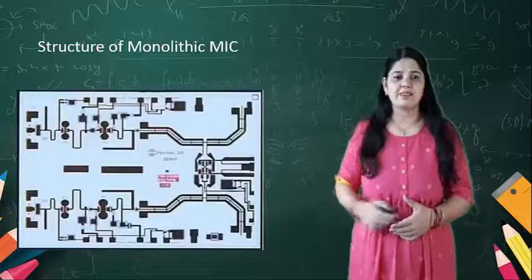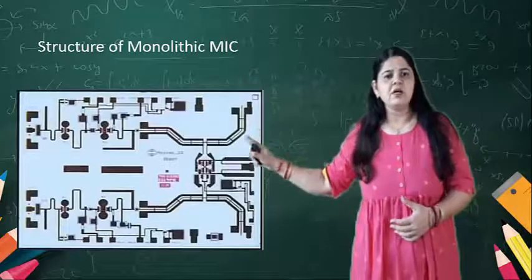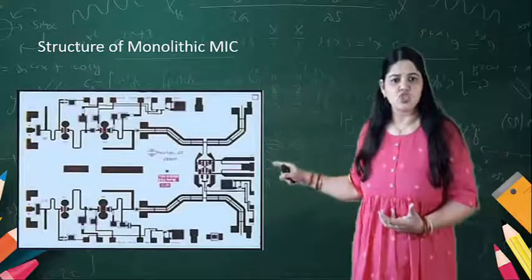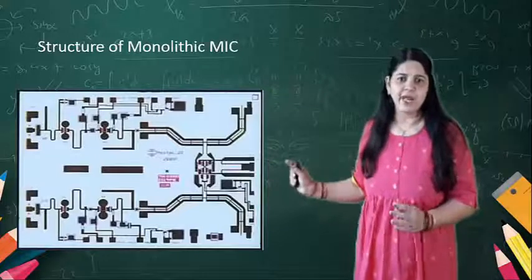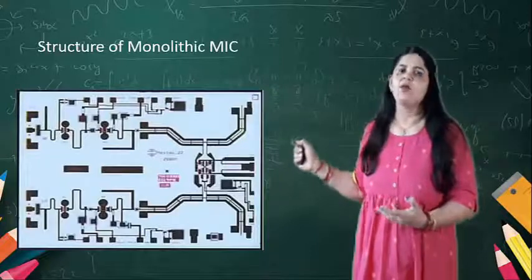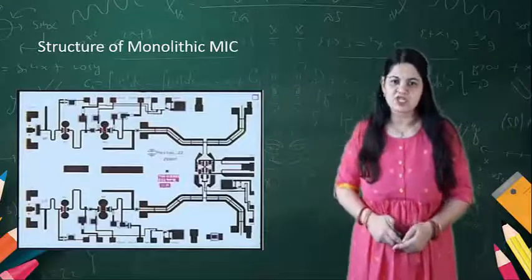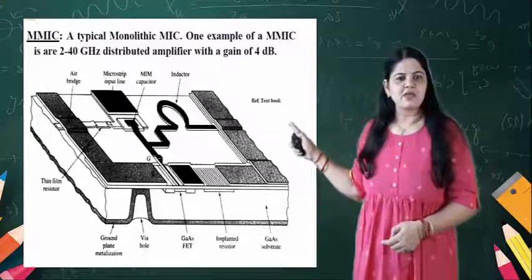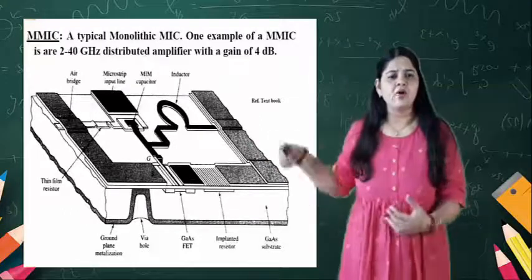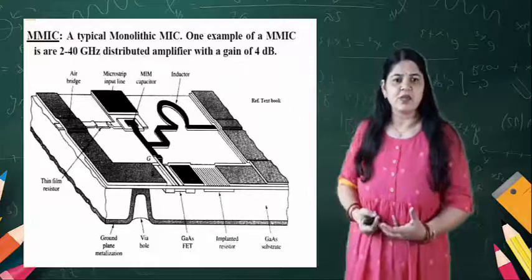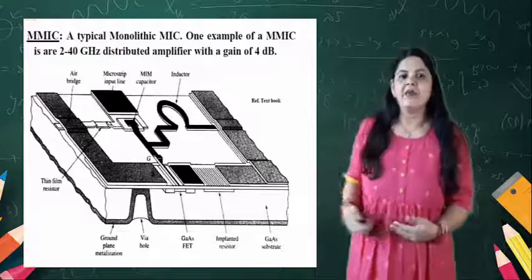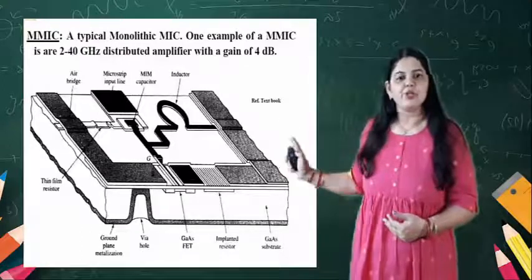Now the structure of the monolithic MMIC — you can see it here. It is similar to a printed circuit board. You can see that all the components are made here as small components, and they are also microwave stripline components. This is the structure of the monolithic IC. You can see how the different elements are designed — the shape of the inductor, how it is designed, and the capacitor. All the lumped elements can be designed in terms of microwave elements, and this is what the MMIC component looks like.